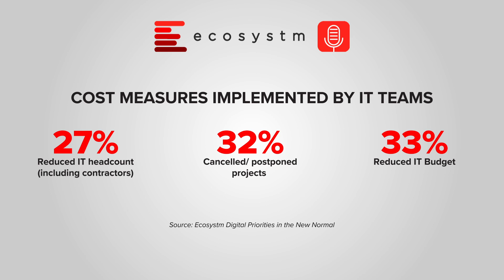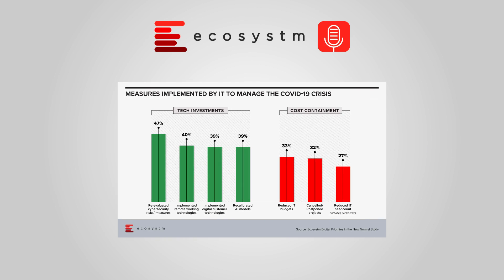But at the same time, the physical distancing demands of the virus have increased the priority of adding remote working and e-commerce capabilities. Addressing cyber security risks have become a top priority as they've had to support people working from home in other distributed locations. Almost two in five organisations have implemented new digital customer engagement technologies, and a similar number have implemented new remote working capabilities — all in the midst of the pandemic.